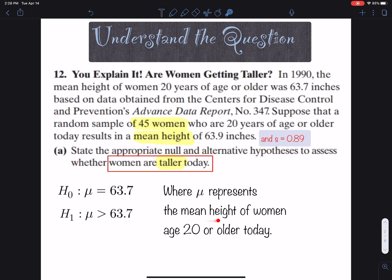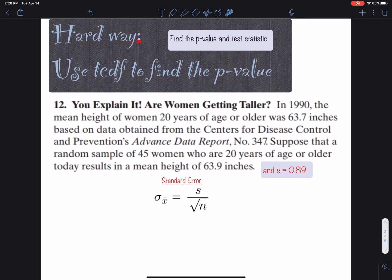So μ represents the mean height of women age 20 or older today. That's an important word - our focus is on women today and whether they are taller. Let's get into the hard method first.